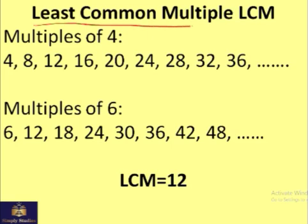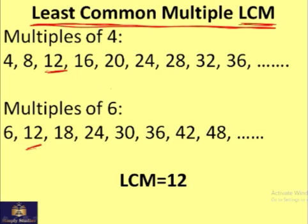The most commonly used concept here is the LCM, or least common multiple. Looking at the multiples of 4 and 6: 12 is a common multiple, 24 is a common multiple, 36 is a common multiple, and so on. The smallest of these is 12, so 12 is the least common multiple.